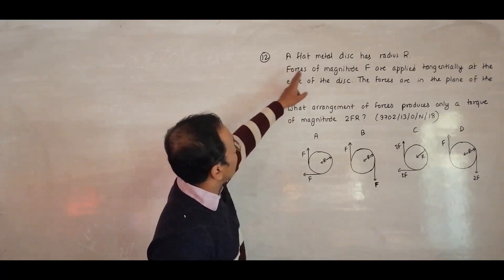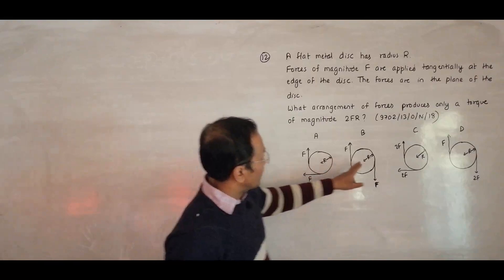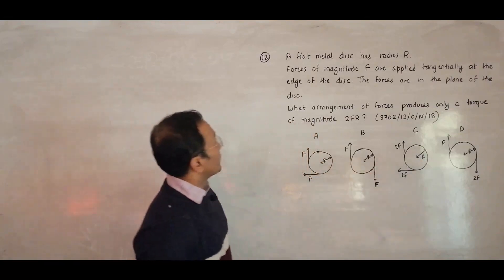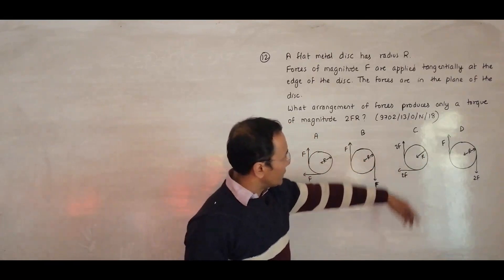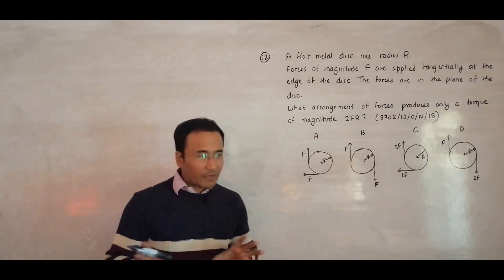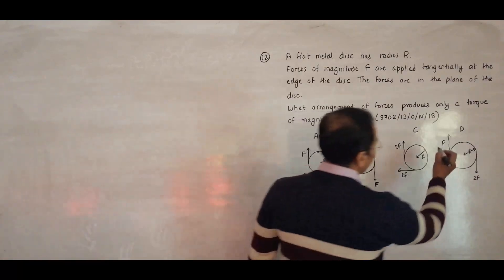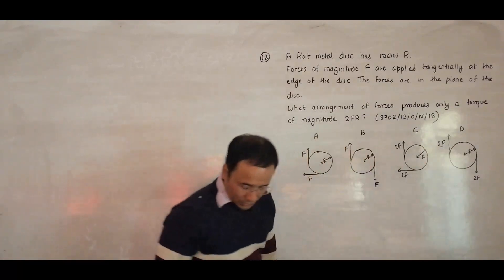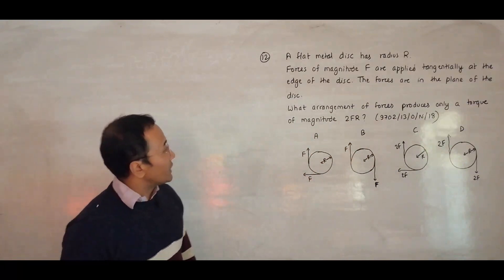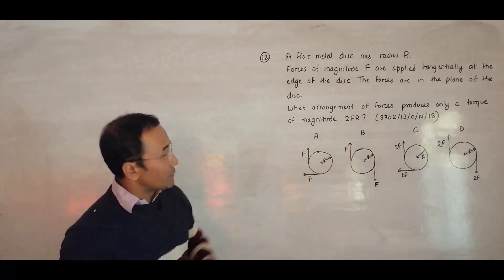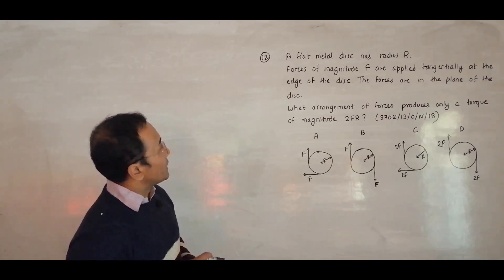It says that a flat metal disc has radius R. Forces of magnitude F are applied tangentially at the edge of the disc. The forces are in the plane of the disc.